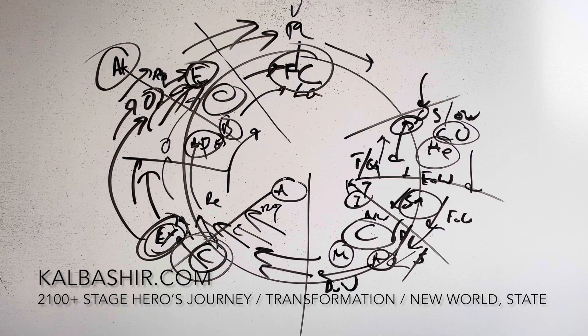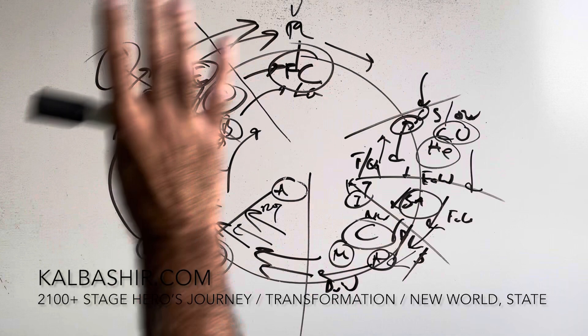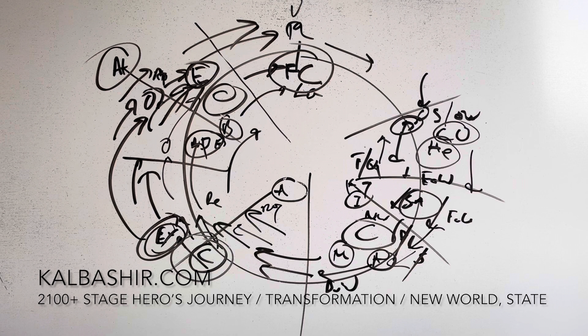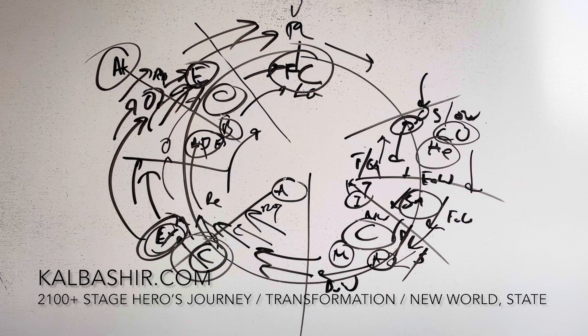If you want a detailed deconstruction of this story, you can order it off the website. But once again, this whole process of journey, change, transformation, movement through new worlds and states - you can purchase the 2100 stage hero's journey transformation movement through new worlds and states off the website.